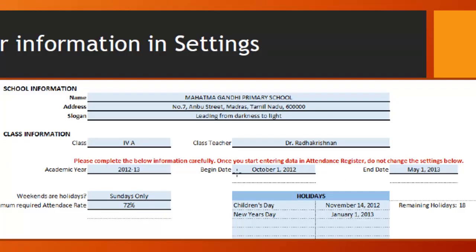You can enter your begin date and end date for your academic year. For weekends and holidays, here's where you would choose whether you want only Sundays to be your weekends or both Saturdays and Sundays. You would also enter the minimum required attendance rate, which will be used in the template. You also have the option of entering your holidays — up to 20. Once you enter these holidays, the template will automatically not consider these days as working days. Here I've already entered two holidays and the message says there are still 18 more that I can enter.